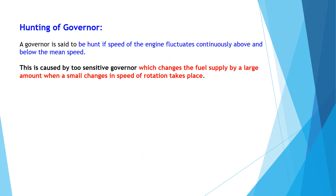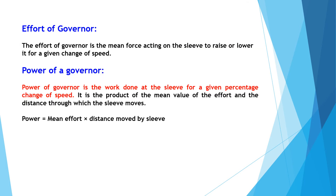The hunting of a governor occurs when the speed of the engine fluctuates continuously above or below the mean speed. Hunting is caused by an overly sensitive governor which changes the fuel supply by a large amount when only a small change in speed of rotation takes place. The effort of the governor is the mean force acting on the sleeve to raise or lower it for a given change of speed.